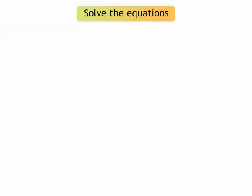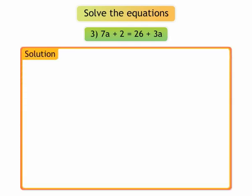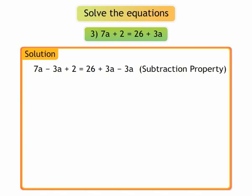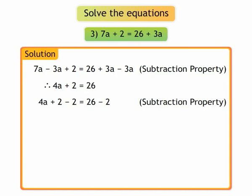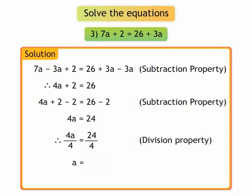3. 7a plus 2 equal to 26 plus 3a. On using the subtraction property, we get 4a plus 2 equal to 26. By subtraction property, 4a plus 2 minus 2 is equal to 26 minus 2. We get 4a is equal to 24. By division property, 4a upon 4 is equal to 24 upon 4. We get a is equal to 6. The solution of the equation is 6.